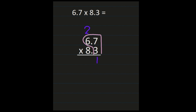3 times 7 is 21 — place the 1, carry the 2. 6 times 3 is 18, plus 2 is 20. Then I cross out the numbers I've already used and place a 0 on the next line to get started. Then, just like when we multiply with whole numbers, I'll start with the 8. 8 times 7 is 56, then 8 times 6 is 48, plus the 5 is 53.